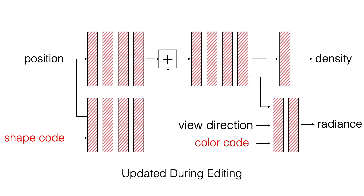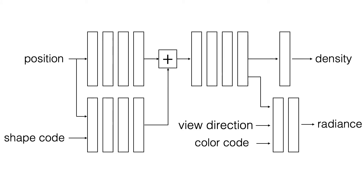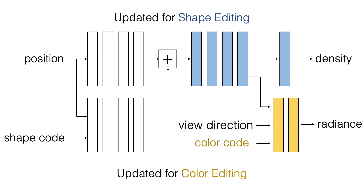During editing, we fine-tune the parameters of our network to modify the shape and color of an instance. However, editing and rendering are computationally expensive if we optimize the entire network. Our second challenge is to find a minimal set of model parameters to tune that can effectively and efficiently propagate a user edit. To address this challenge, we propose an editing strategy where only a few components of our network can be modified to effectively execute the user edit.